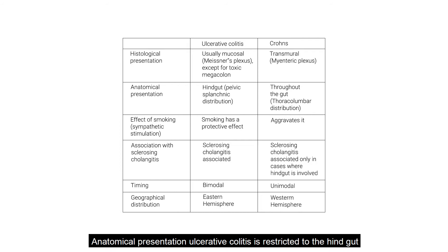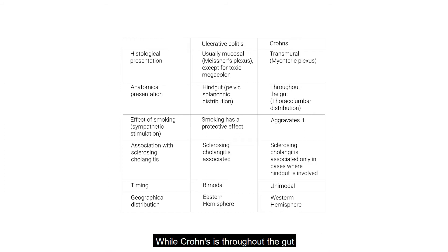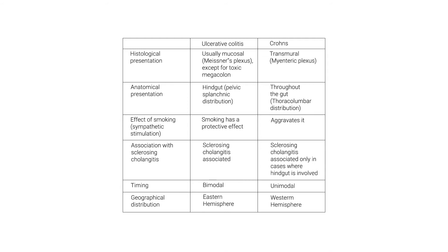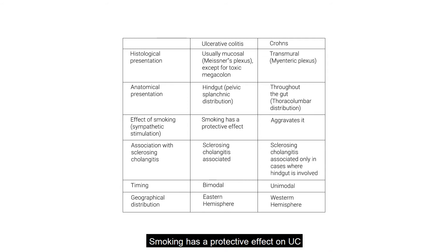Anatomically, ulcerative colitis is restricted to the hindgut, which is supplied by the pelvic splanchnic nerves, while Crohn's is throughout the gut with a thoracolumbar distribution. Considering that smoking is a sympathetic stimulus, smoking has a protective effect on ulcerative colitis while it aggravates Crohn's disease.